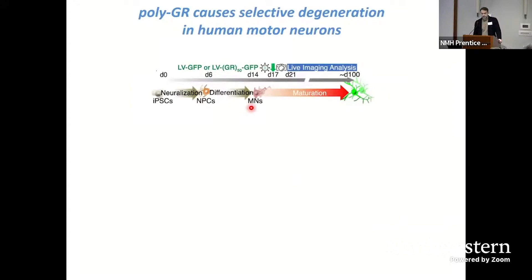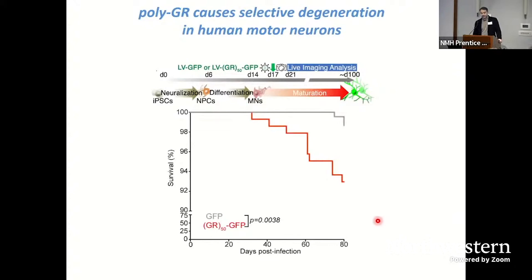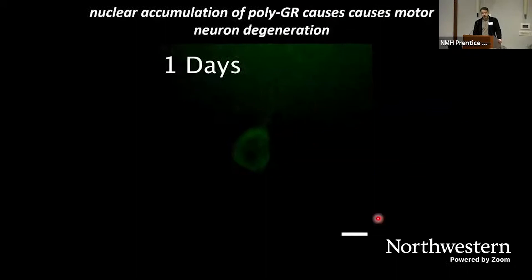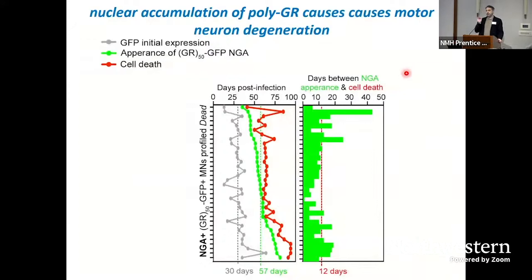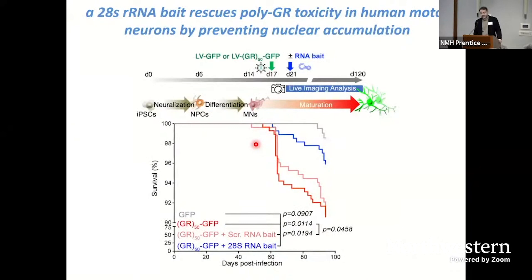We next tested this in a neuronal model system using stem cell-derived wild-type motor neurons transfected with 50 copies of polyGR. Surprisingly, only about 10% of these neurons degenerate across 80 days in culture. It turns out that the motor neurons that degenerate are exclusively ones that accumulate polyGR within the nucleus — we're able to demonstrate this by tracking individual cells. Accumulation of polyGR within the nucleus is basically a death sentence for these motor neurons: as soon as polyGR ends up in the nucleus, we see downstream defects in ribosomal homeostasis and the motor neurons degenerate.